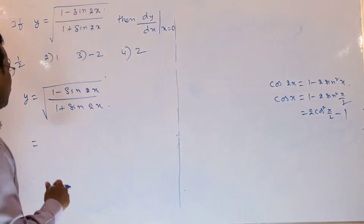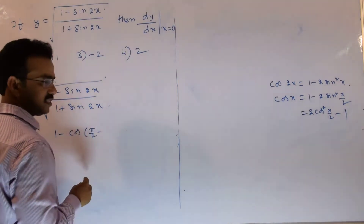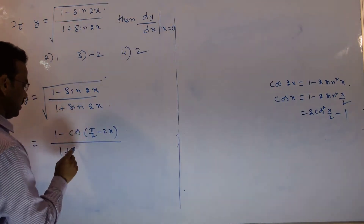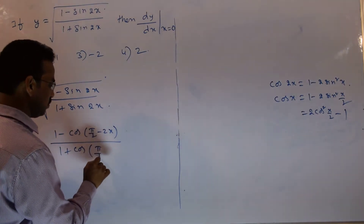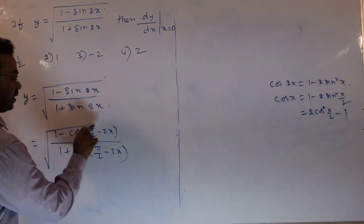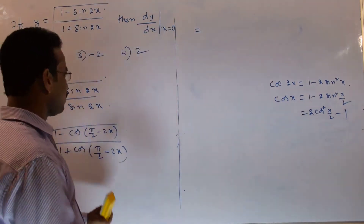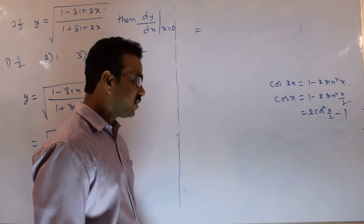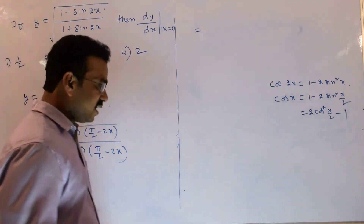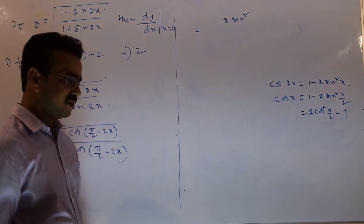Let me write in terms of cos and then apply the formula. The numerator 1 minus sin 2x can be written as 1 minus cos(π/2 minus 2x). Applying the formula 1 minus 2 sin²(x/2), with x replaced by (π/2 minus 2x), the 1s cancel and we get 2 sin² of (π/2 minus 2x)/2, which simplifies to 2 sin²(π/4 minus x).